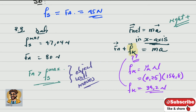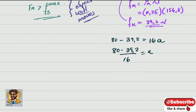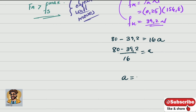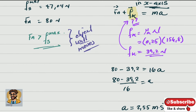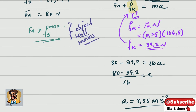Taking right as positive and substituting: 80 − 39.2 = 16 × a. The magnitude of the acceleration is 2.55 m/s². This question carries three marks: one for applying Newton's second law, one for the substitution including the kinetic friction calculation, and one for the final answer.